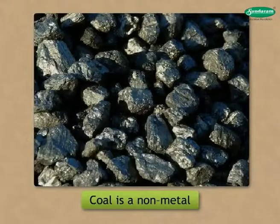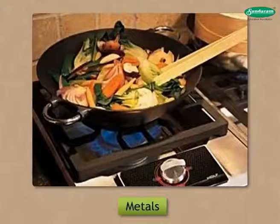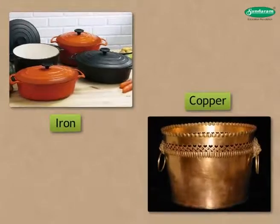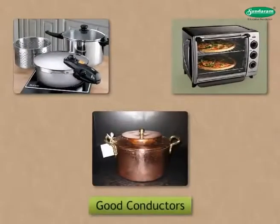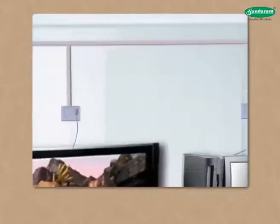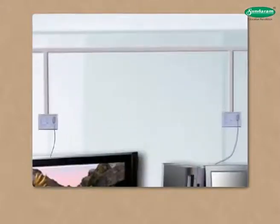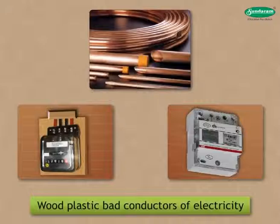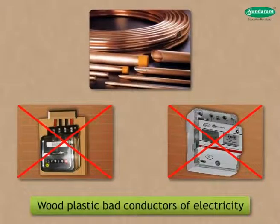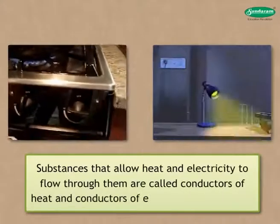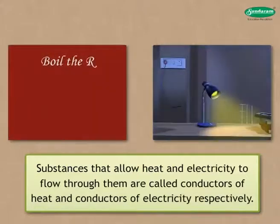Non-metals are neither malleable nor ductile. We use metal utensils for cooking food because metals like iron and copper are good conductors of heat — they can carry heat through them. Almost all metals are good conductors of heat and electricity. Electrical wiring in houses uses copper wires, but switchboards are made of wood or plastic because copper is a good conductor while wood and plastic are bad conductors of electricity. Substances that allow heat and electricity to flow through them are called conductors.